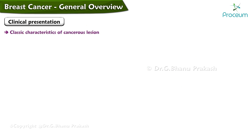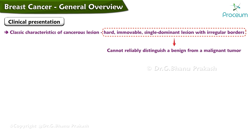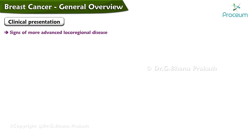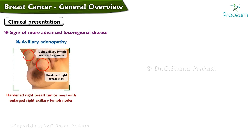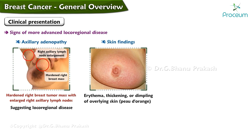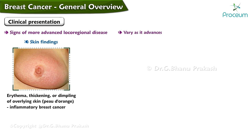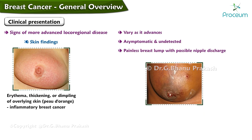The classic characteristics of a cancerous lesion include a hard, immovable, single dominant lesion with irregular borders. However, these features cannot reliably distinguish benign from malignant tumor. Signs of more advanced local-regional disease include axillary adenopathy, or skin findings such as erythema, thickening, or dimpling suggesting inflammatory breast cancer. The presentation can vary and may include a painless breast lump with possible nipple discharge.